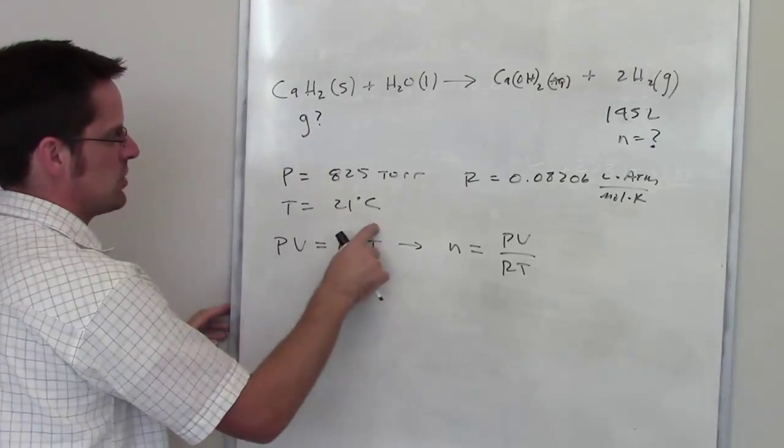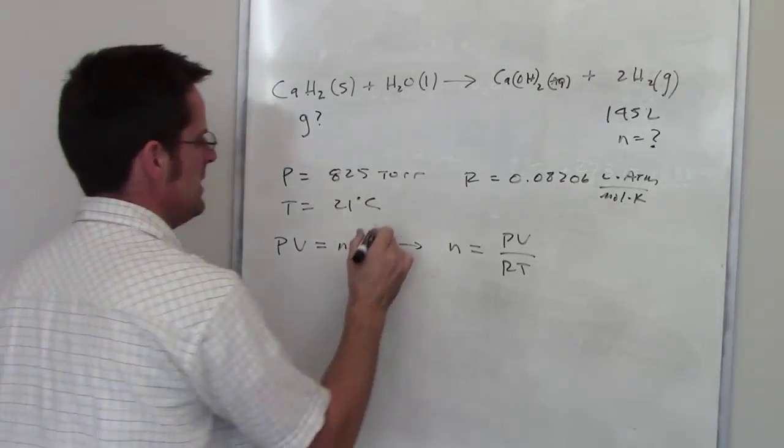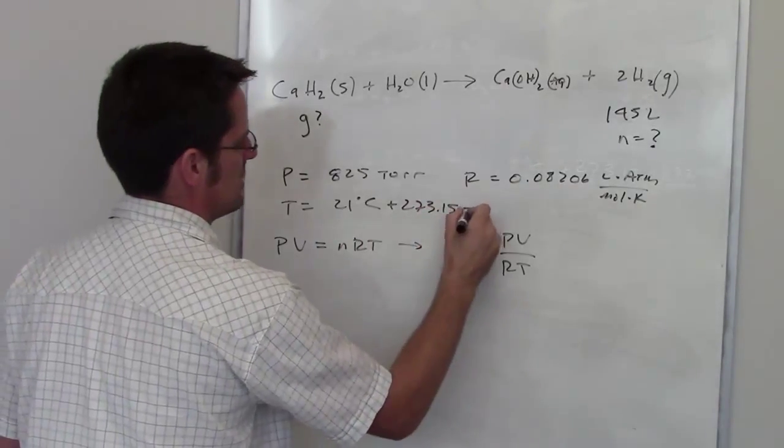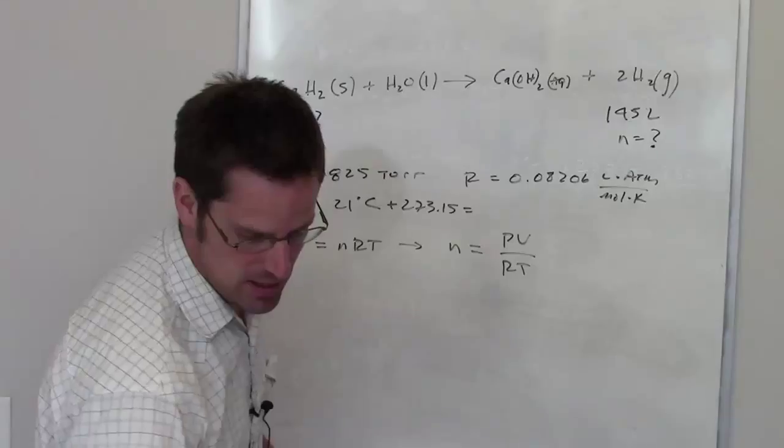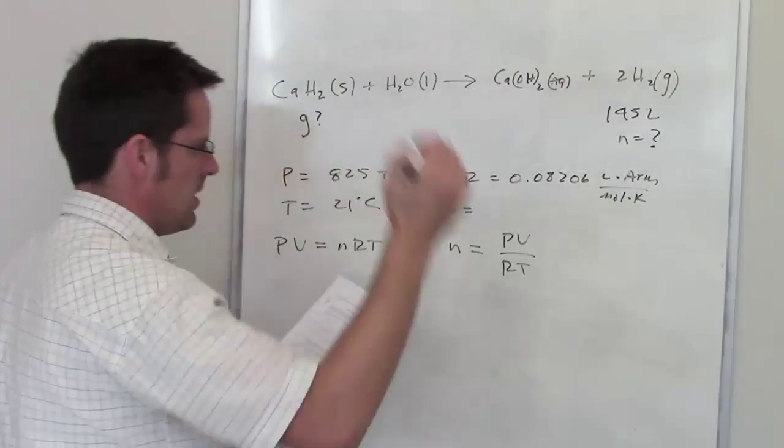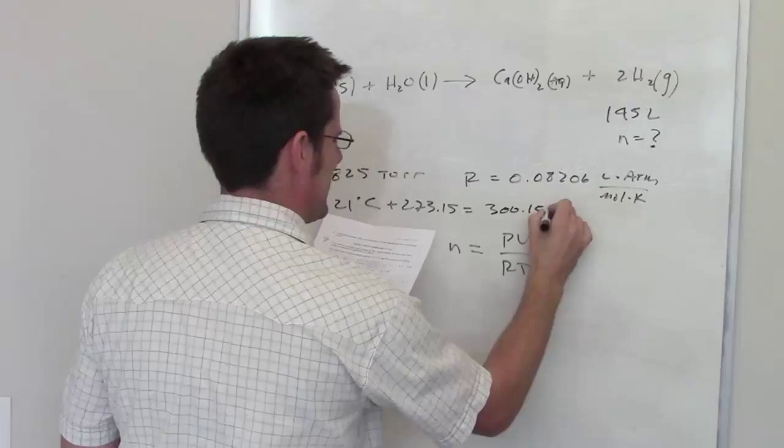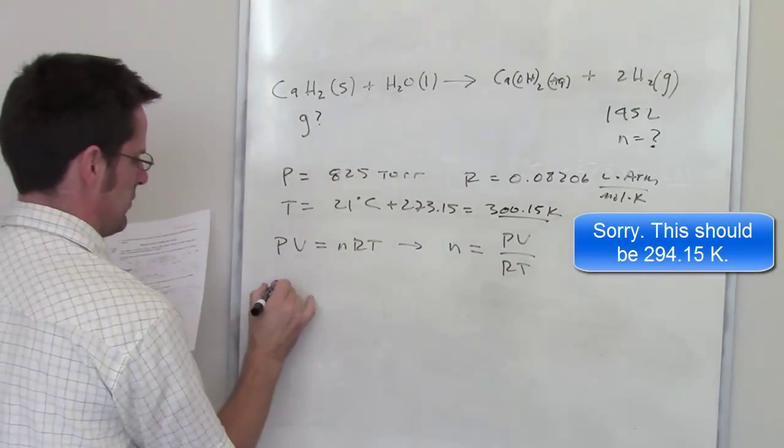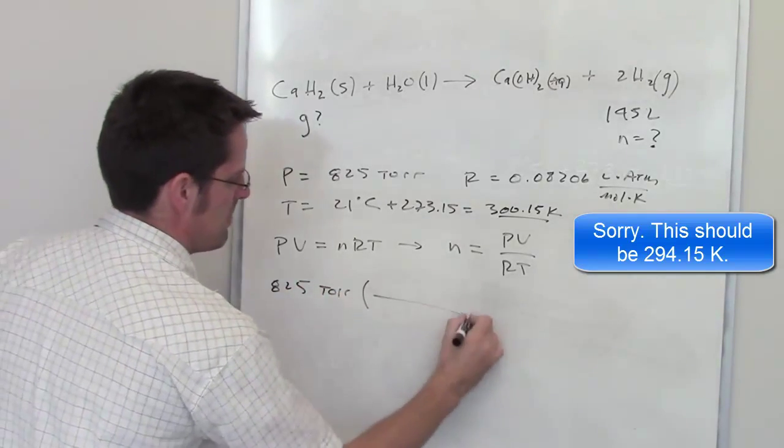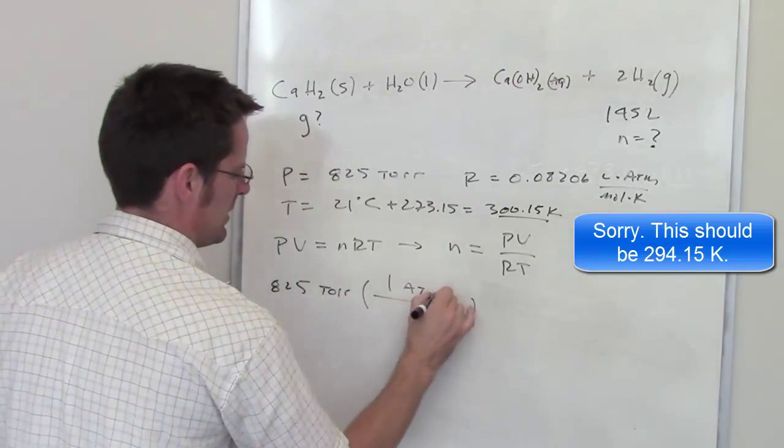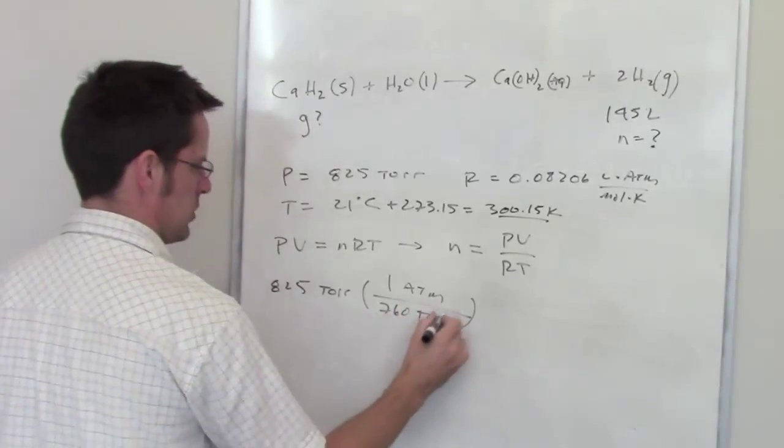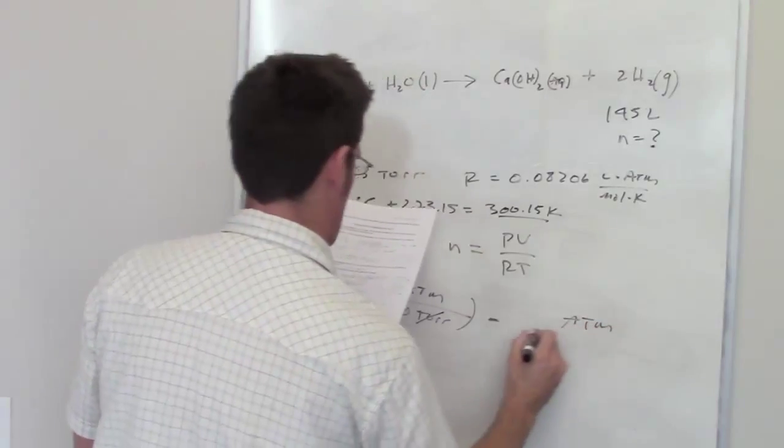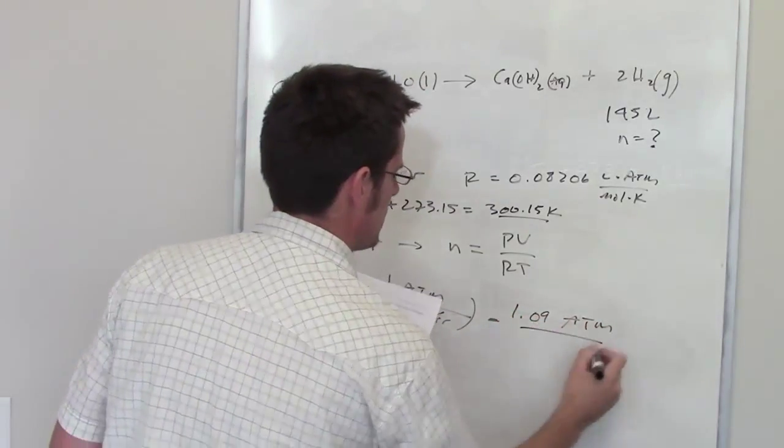Pressure is in torr, temperature is in degrees Celsius. So I'm going to have to do some conversions. 21 added to 273.15 gives me the number of kelvins that I've got. That ends up equaling 300.15 kelvins. So that's my temperature. This pressure I need to convert into atmospheres. So I've got 825 torr. I've memorized that one atmosphere is equal to 760 torr. The torr cancel each other out, and I've calculated that that ends up being 1.09 atmospheres.